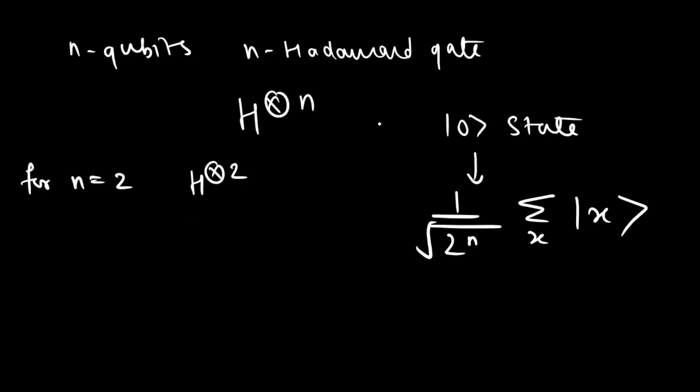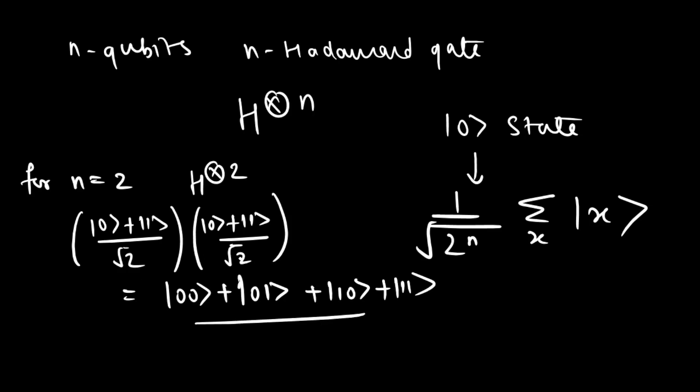So for example for n equal to 2 our Hadamard transform would be H⊗2 on the state |0⟩ which can be written as (|0⟩ + |1⟩) / √2 times (|0⟩ + |1⟩) / √2 which would be equal to (|00⟩ + |01⟩ + |10⟩ + |11⟩) / 2.